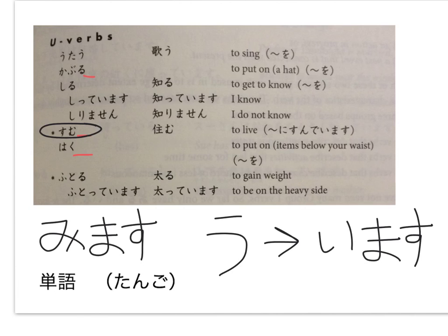So we have UTAU, KABURU, SHIRU — and this is listed as 'to get to know' — because we already know WAKARIMASU is 'to know,' but that's like an understanding type of know, whereas SHIRU is like knowing a person or knowing a fact. So SHITE IMASU is like 'I know that,' whereas WAKARIMASU is more of an 'I understand.' SUMU, SUMIMASU.